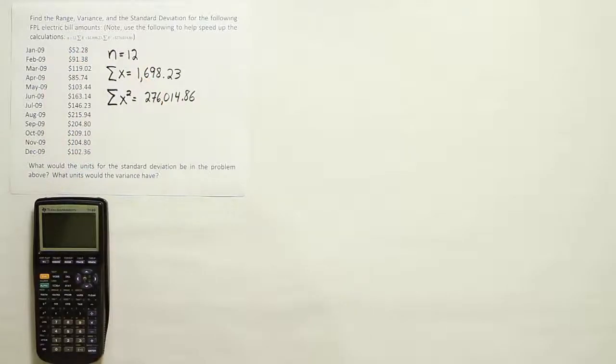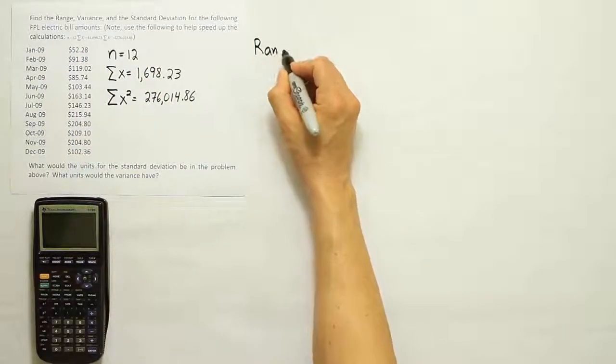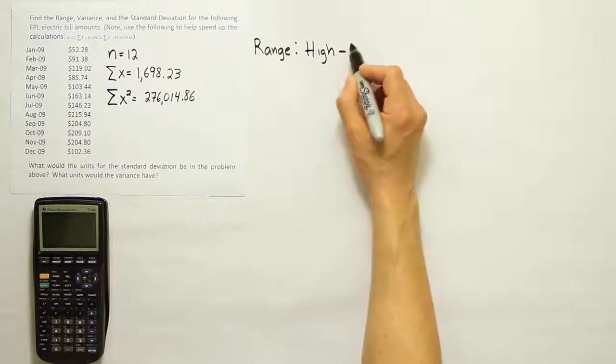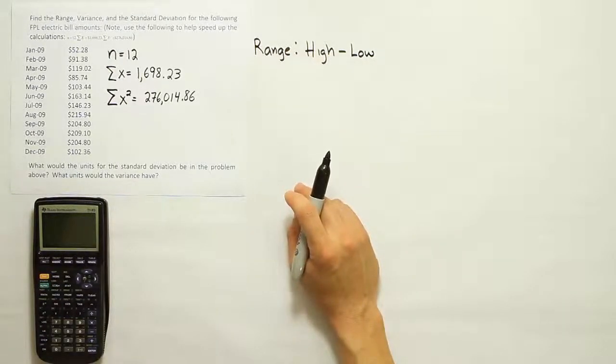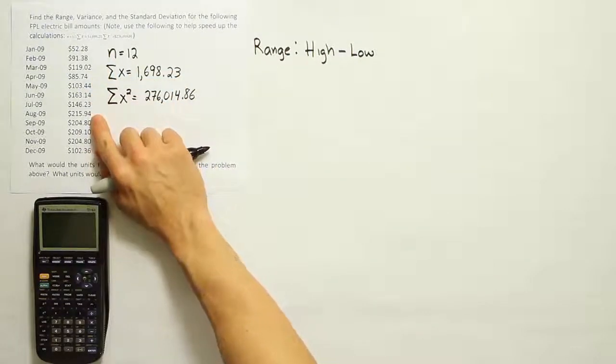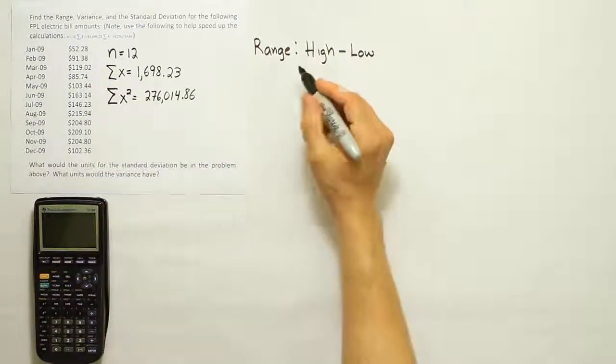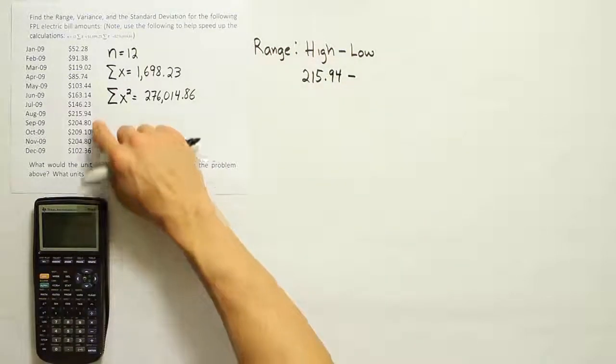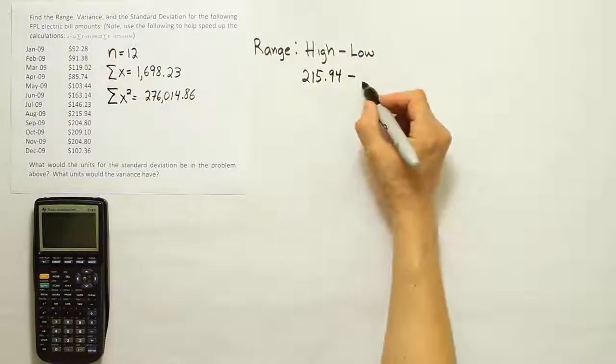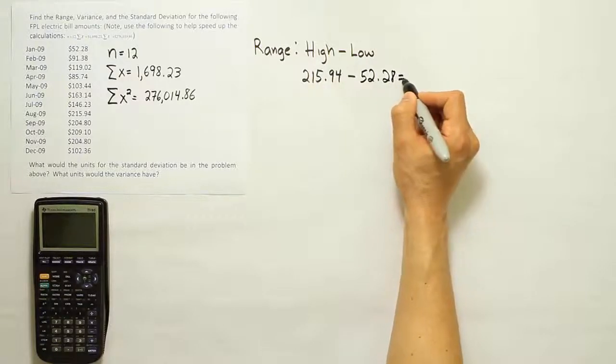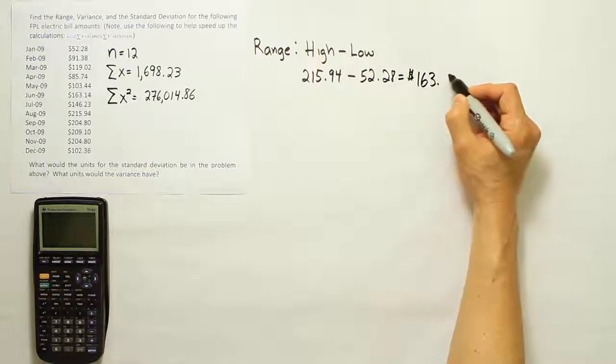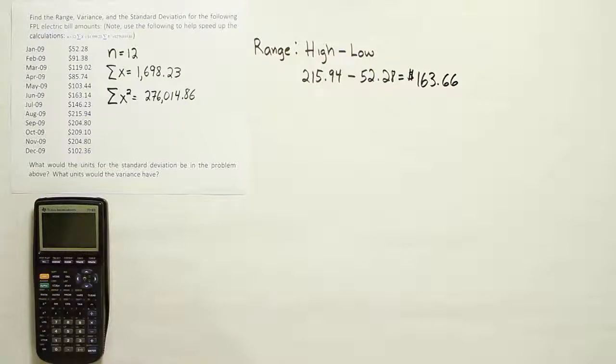Alright, so let's calculate the range first. The range is pretty easy. The range involves simply subtracting two numbers. The high number minus the low number. So high minus low will give us the range. So I look down this list, I see that I think 215 is the largest number in the list. I'm pretty sure that's our biggest number. So I'm going to write the 215.94 and subtract off the lowest number. I'm pretty sure that the lowest number here is 52.28. So $52.28. And when I subtract those two numbers, I'll end up with $163.66. So that's my range. That's easy enough.